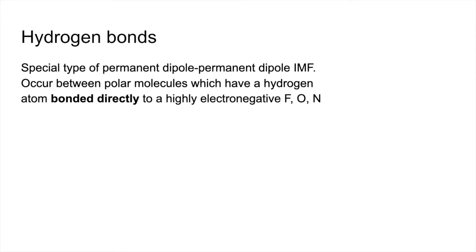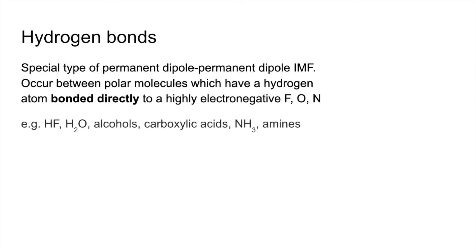Hydrogen bonds are a special type of permanent dipole intermolecular force. They occur between polar molecules that have a hydrogen directly bonded to a highly electronegative fluorine, oxygen, or nitrogen. Examples of molecules with this force include hydrogen fluoride, water, alcohols (because of the OH bond), carboxylic acids (OH in the carboxyl group), ammonia, and amines (nitrogen directly bonded to hydrogen).